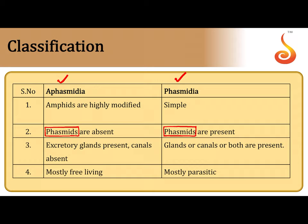You must be wondering what is a Phasmid? A Phasmid is present in the posterior region, near the tail of the worm, closer to the anus or the cloaca. The exact function of these Phasmids is not known, but it is guessed that they may be secretory, excretory, or, as mentioned in some literature, chemorepulsive in nature.